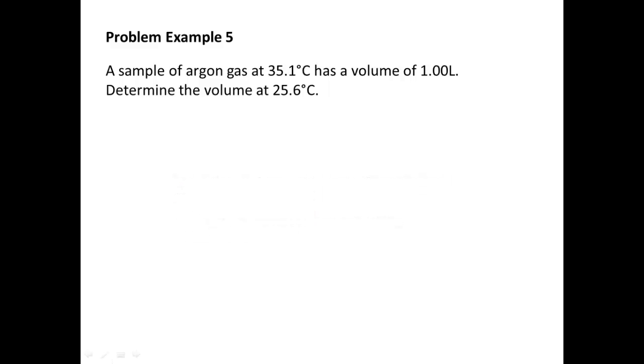So, we're going to do very much the same thing. We're going to determine what variables are given to us. It looks like we have two temperatures. That means temperature one is 35.1 degrees Celsius. Volume one is 1.00 liter. Temperature two is 25.6 degrees Celsius. And it looks like we're solving for volume two. Okay, so first thing we should do, let's take care of our temperatures. So, temperature one, let's add 273.15 to that. Same with temperature two.